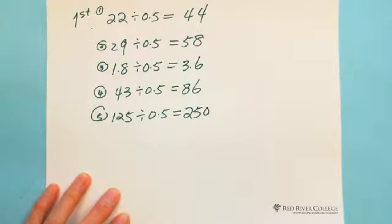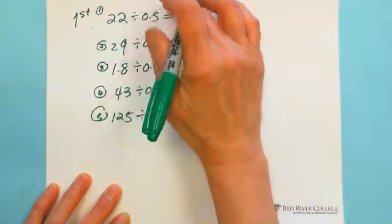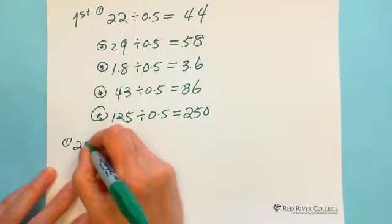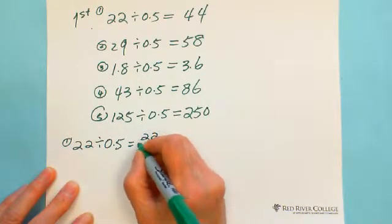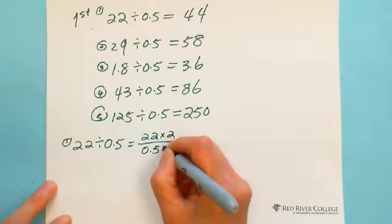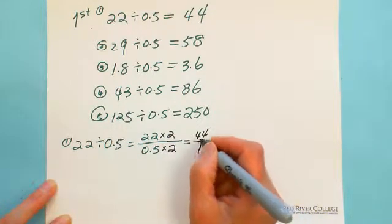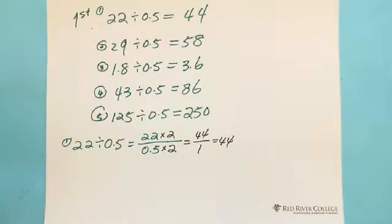Let me explain why this is really simple. We express the division in fraction form. You have 22 divided by 0.5 — put 22 on top and 0.5 on the bottom. Then multiply both top and bottom by 2. 0.5 multiplied by 2 is 1, and 22 becomes 44. 44 over 1 is 44. That's why it's so fast. Divided by 0.5 is the same as multiplied by 2.